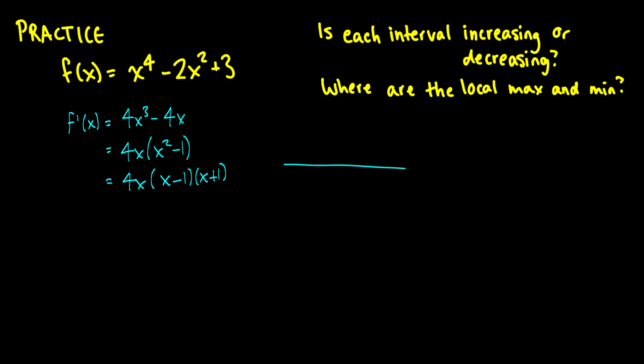On the number line we have critical points at 0, -1, and 1. Taking a value less than -1 gives negative × negative × negative = negative. Picking x = -0.5 gives negative × negative × positive = positive. Picking x = 0.5 gives positive × negative × positive = negative. A value greater than 1 gives positive × positive × positive = positive.